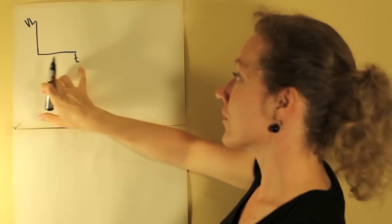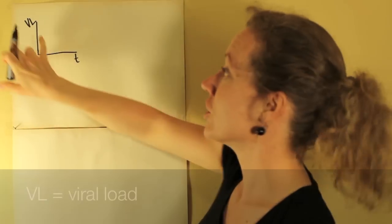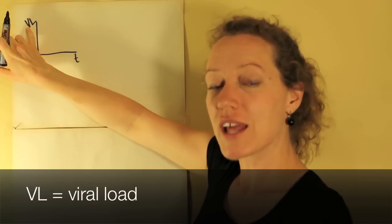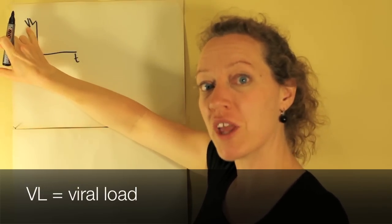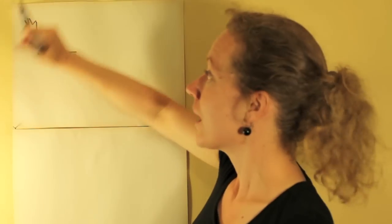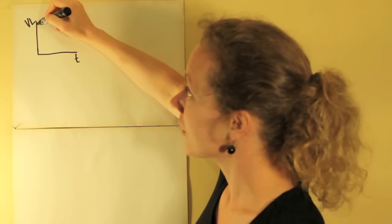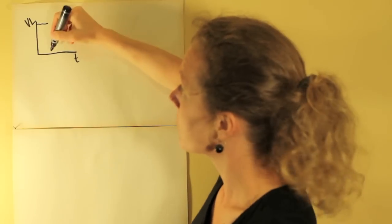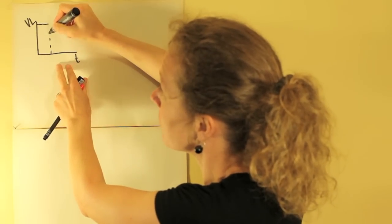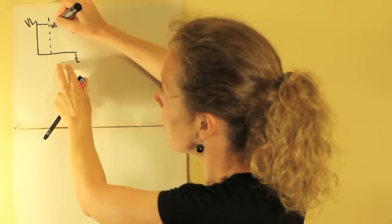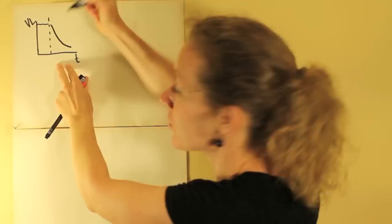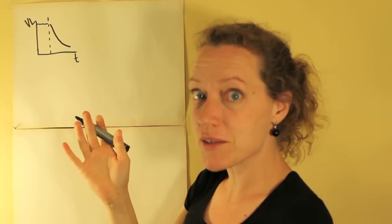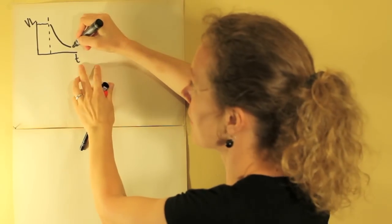So on this graph there will be time in this direction and viral load, so that's the amount of virus in the blood of the patient, on the y-axis. So initially the amount of virus is high but then if treatment is started the amount of virus will go down unless resistance evolves, in which case it will go up again.